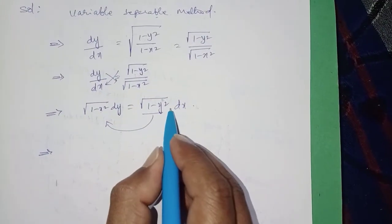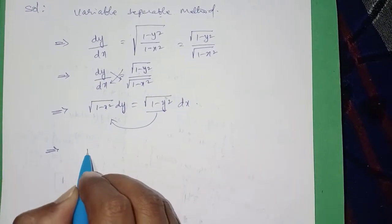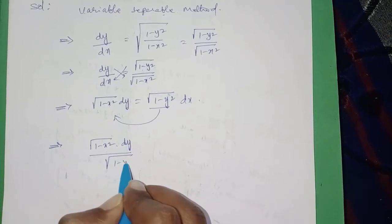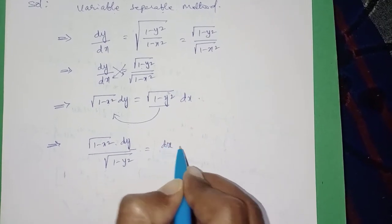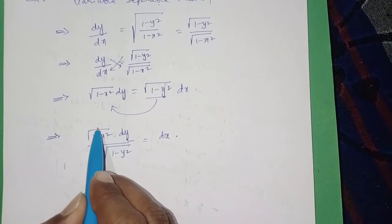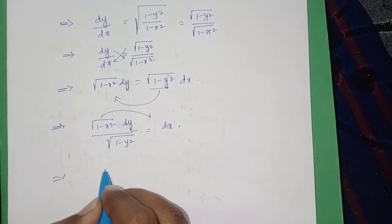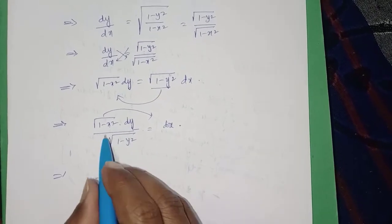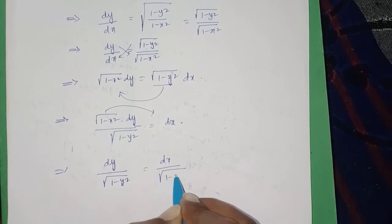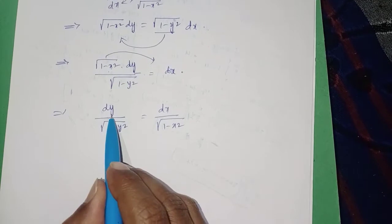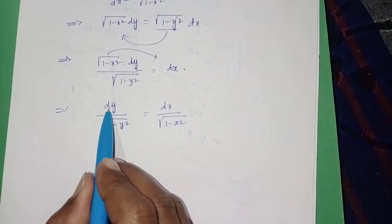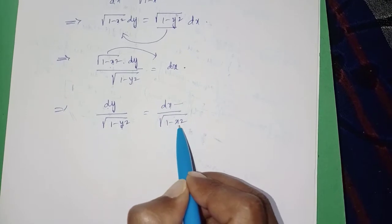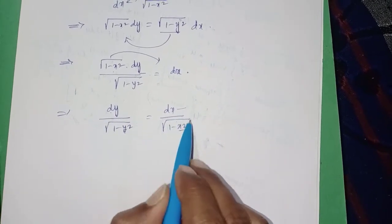Rearranging in multiplication form, transferring terms: under root (1 minus x square) into dy divided by under root (1 minus y square) equals dx. This gives dy upon under root (1 minus y square) equals dx upon under root (1 minus x square). Now variables are successfully separated — derivative dy has variable y on the left, and dx has variable x on the right.